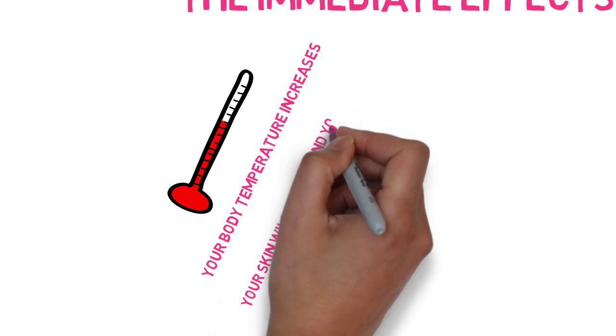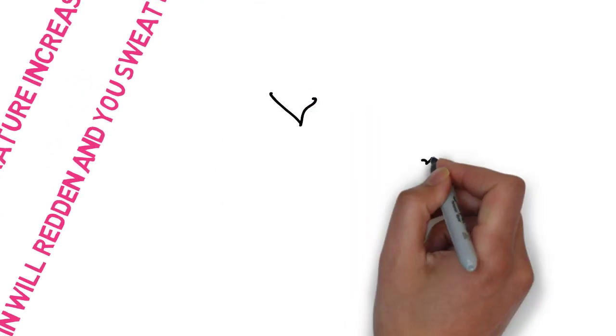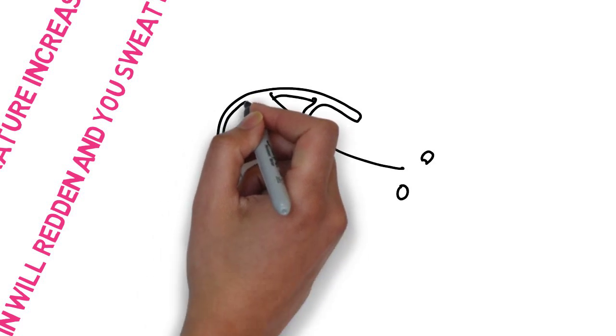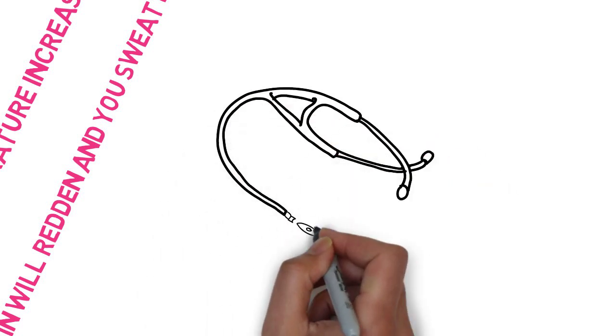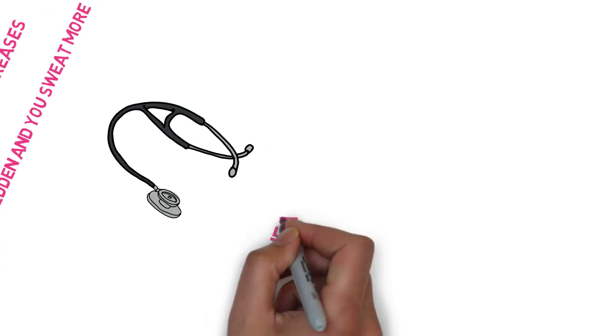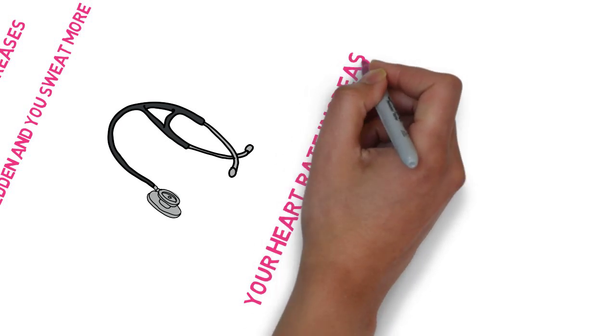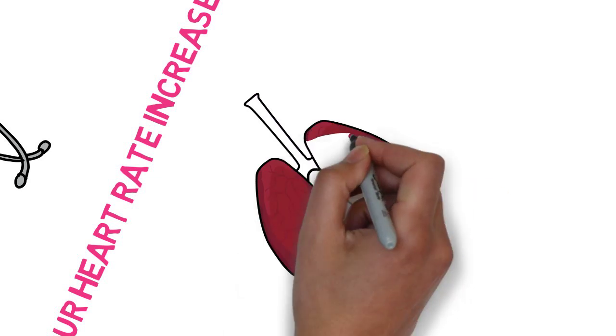As you continue to exercise, your heart rate will increase as your heart is working harder to deliver oxygen to the working muscles, which is what we've learned about previously. You will also breathe more deeply and more frequently as your body delivers more oxygen to the working muscles.